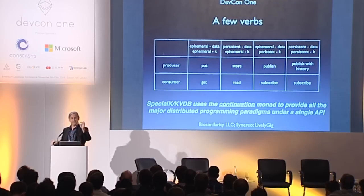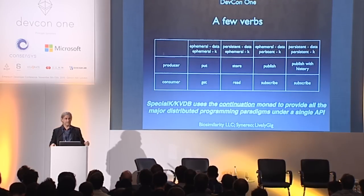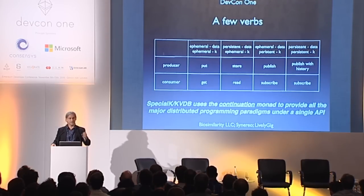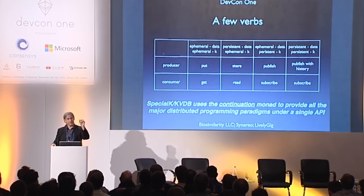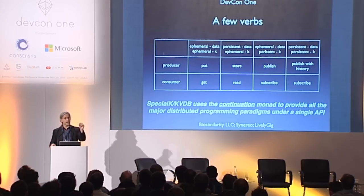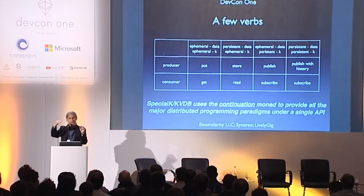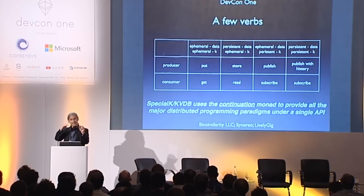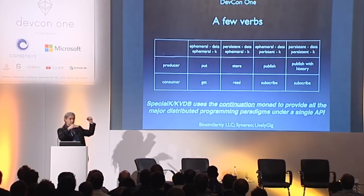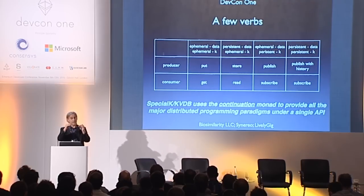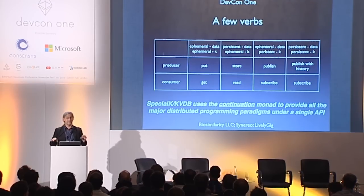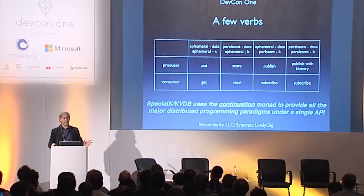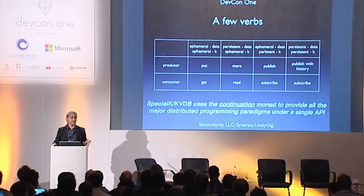At this location — this address on the blockchain, or in Special K's case a more sophisticated kind of key — you will either have a continuation or some data. If a program is looking for data and it's not there, the continuation will be stored there. If a program is depositing data and there is a continuation there, that continuation will be woken up and handed the data.